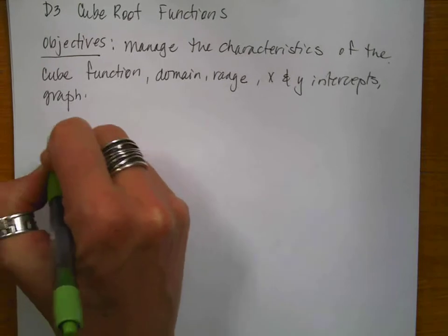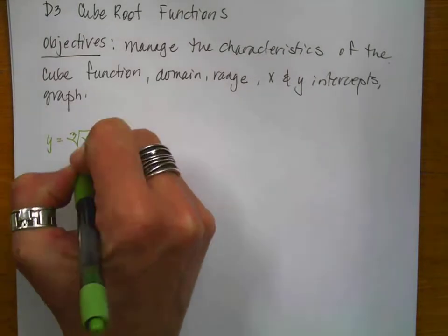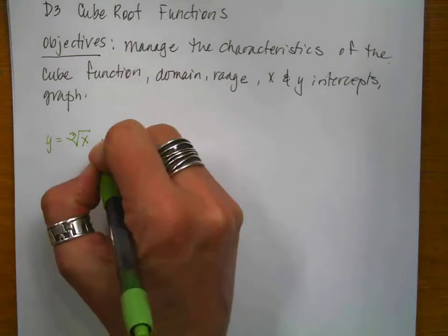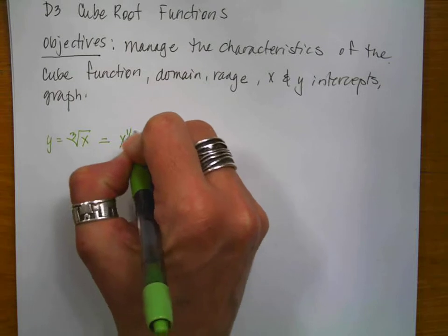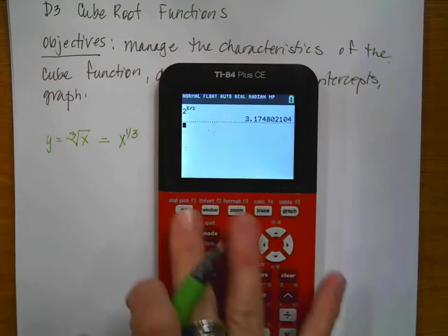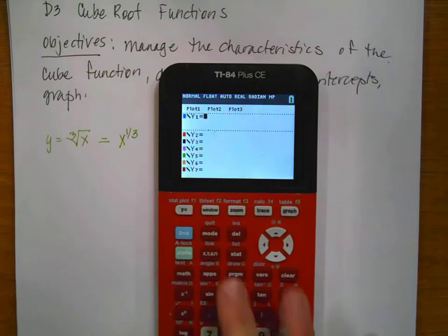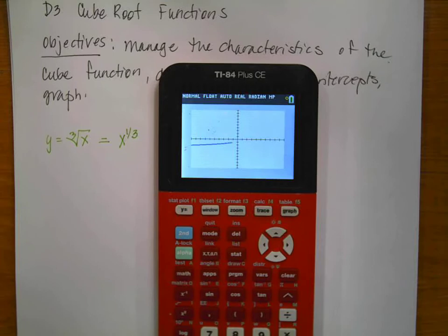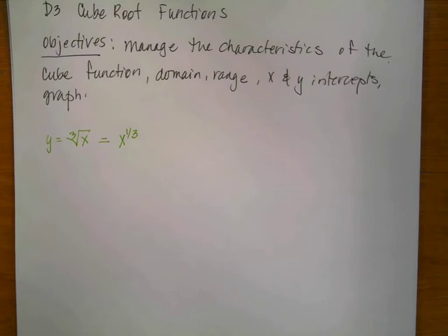So let's write the cube function. It's going to be y equals the cube root of x. If we write this as a rational exponent, it's going to be x to the one-third. It is a pretty cool-looking graph, so I'm going to put it in my grapher so we can see that. I'm going to do x raised to the one-third and do a zoom six. Here comes our cool little graph. Easy to enter into our grapher.